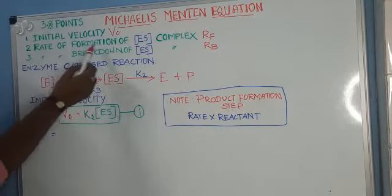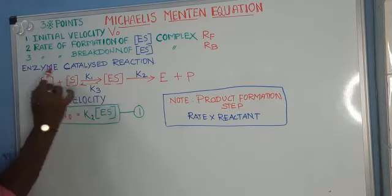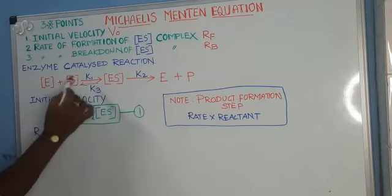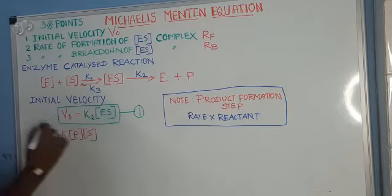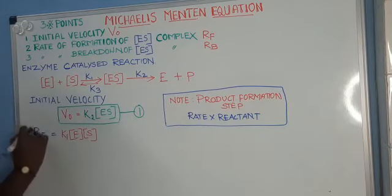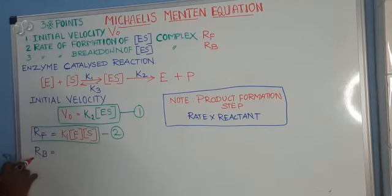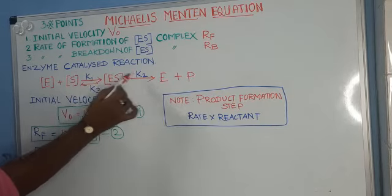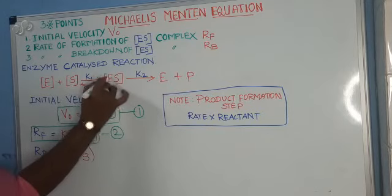The second step: concentrate on the rate of formation of ES complex. The step in which ES complex is formed is E + S → ES, and the same hint applies — rate multiplied by reactant. The rate is K1 and the reactants are E and S, so RF = K1[E][S]. This is the second equation. For the rate of breakdown of ES complex, there are two possibilities, so the rate is K2 + K3, and the reactant is ES.